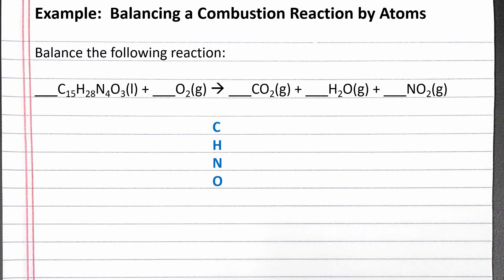So we will balance carbon, hydrogen, and nitrogen first. We can start in any order since all three of these only show up in one place on each side. Let's start with carbon. Initially we have 15 carbon on the left and one on the right. To get the same number of carbon on both sides, we need a coefficient of 1 in front of C15H28N4O3 and a coefficient of 15 in front of CO2. We now have 15 carbon on each side.